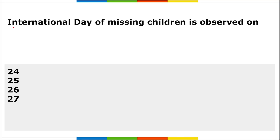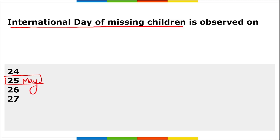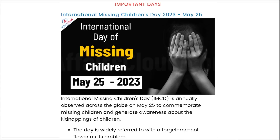Next: when do we observe the International Day of Missing Children? It is observed on 25th of May. This day is observed across the globe to commemorate missing children and generate awareness about kidnappings. The day is widely referred to with a 'forget me not' flower as its emblem. The first ever edition was observed in 2001.